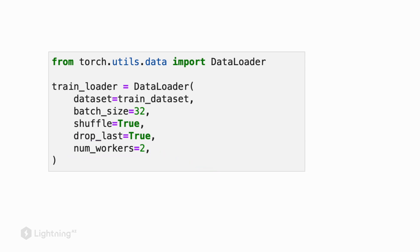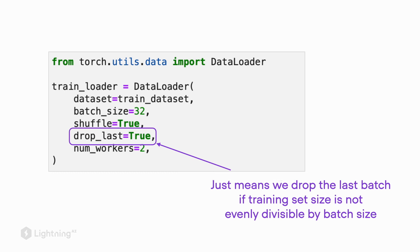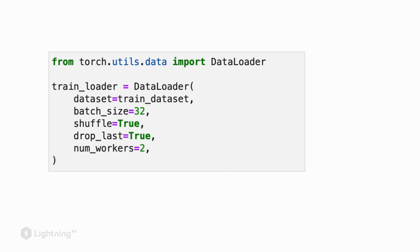And just in case you are curious what drop last means here, so I'm setting drop last equals to true, and I usually do that only for the training set. So this will actually chop the last mini-batch if our data set is not evenly divisible by the batch size. But again, we will cover more of these details in the upcoming video.